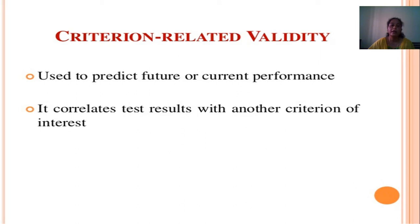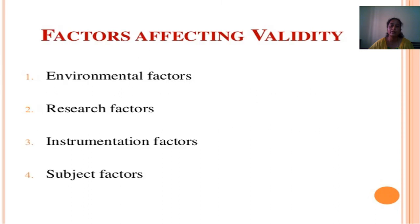Then Criterion Related Validity is used to predict future or current performance. It correlates test results with another criterion of interest.